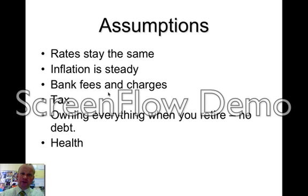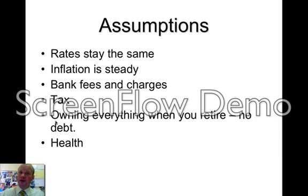There are a few assumptions that we're making whenever we do a super question. One, that your rates stay the same — both on investment and also when you're drawing the money out. That inflation is steady, because that might go up or down. We haven't taken into account any bank fees or charges, because they will erode your money. We haven't taken into account tax. And we're also saying that when you retire, you own everything, so you don't actually have to pay for anything and that doesn't eat out of your super. Also, when you get older you may have health issues, so instead of just having $7,000 per month you might need more. So all these assumptions need to be taken into account when calculating superannuation.